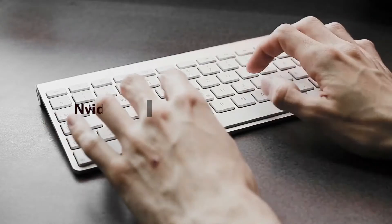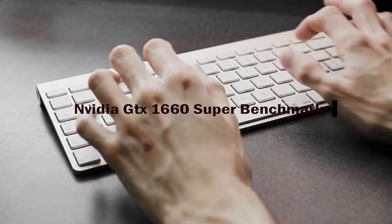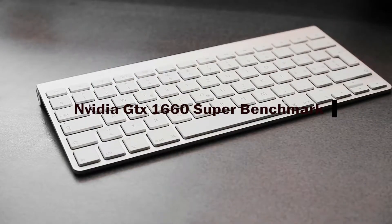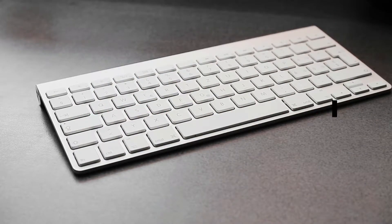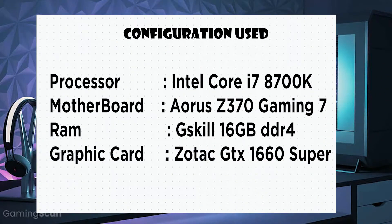Now let's jump towards the benchmarks of this card. First we will see the configurations used. The processor is Intel Core i7-8700K, the motherboard is Aorus Z370 Gaming 7, the RAM is G.Skill 16 GB DDR4, and the graphic card is Zotac's NVIDIA GTX 1660 Super Twin Fan Edition.